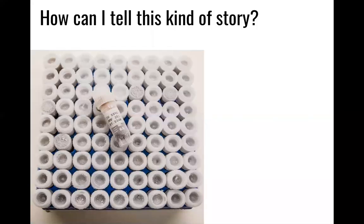This seems like a fairly lofty, challenging story to tell. How would you go about telling this kind of story? The way that I tell it begins in a tube just like this one. This tube contains muscle tissue — either from the pectoralis, the breast muscle, or from the liver — from a bird specimen that was collected somewhere in the world over the last 50 years or so.